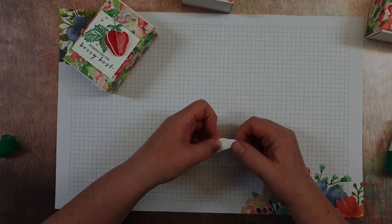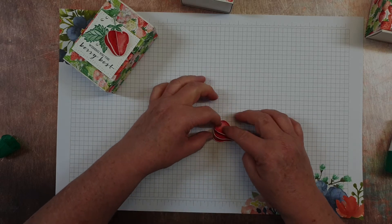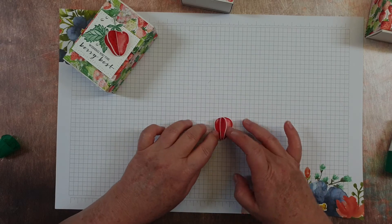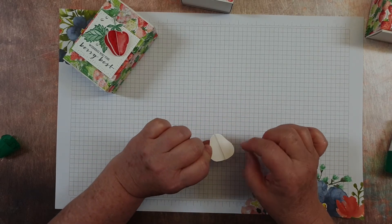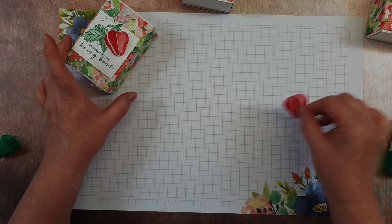And then when that is dry, they'll fold out and make a 3D strawberry. So all I need to do then is put some adhesive on the back and stick it down.